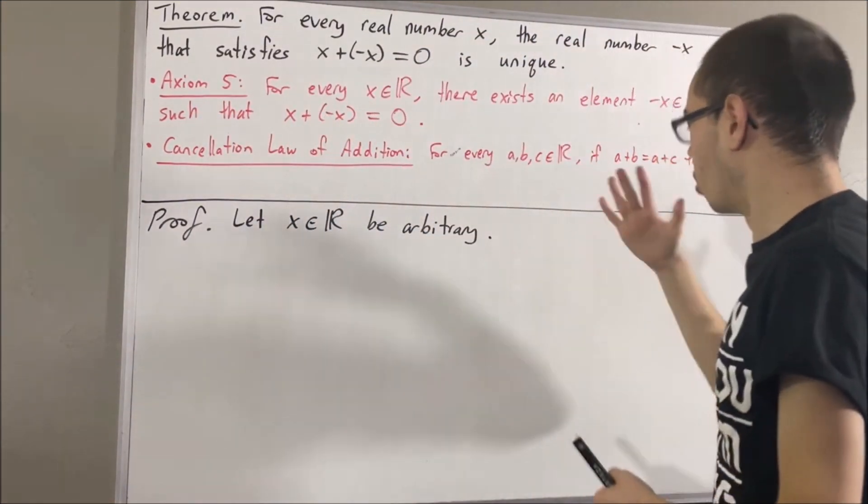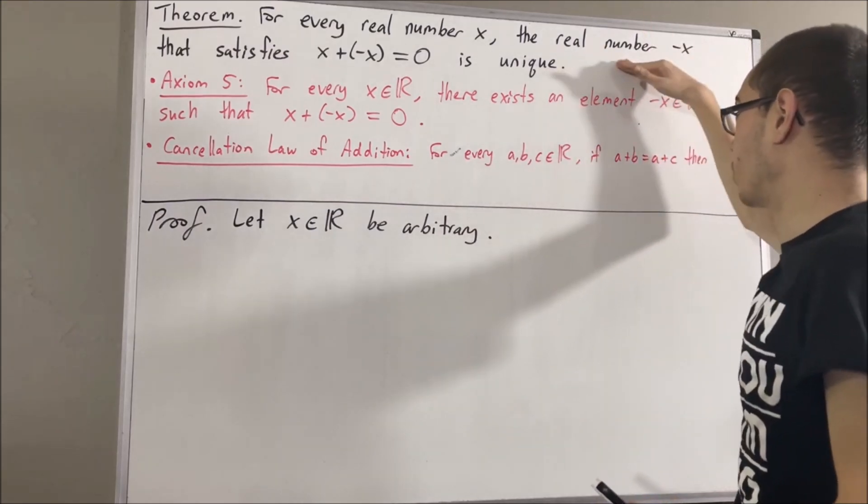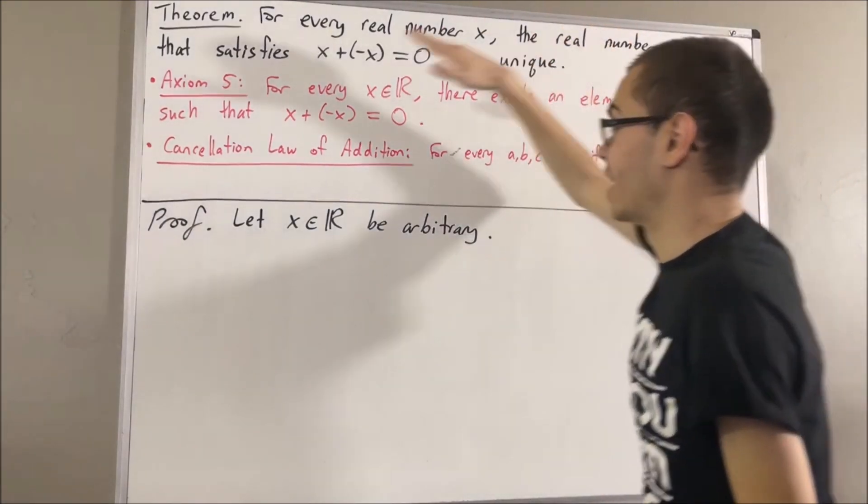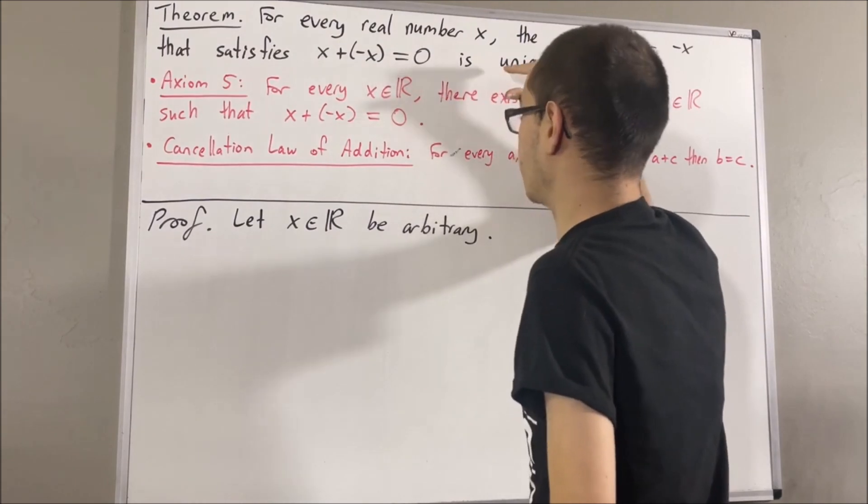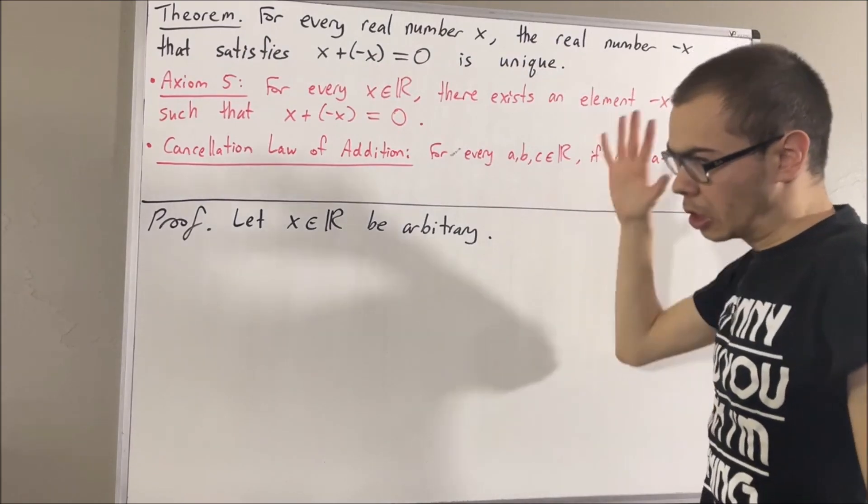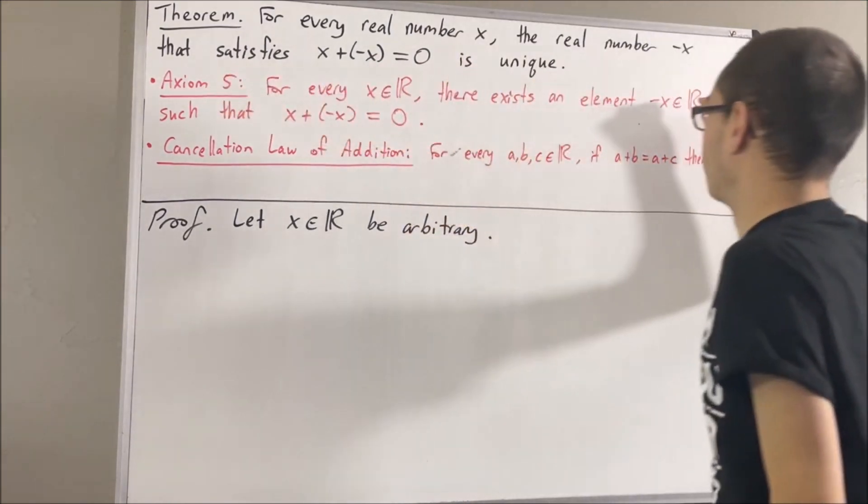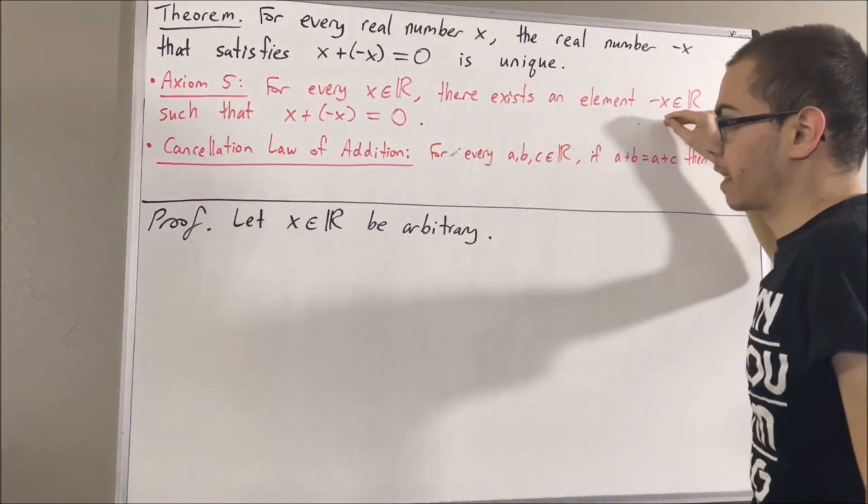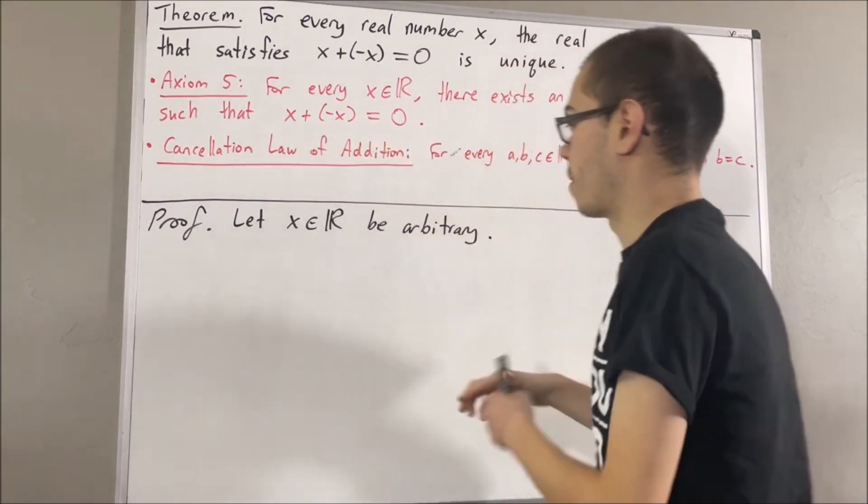From here, the whole goal is to show that the real number which we call negative x that satisfies this property is the only real number which satisfies this property. Now, first of all, let's just note by axiom 5 that the negative x is a real number that satisfies this property.